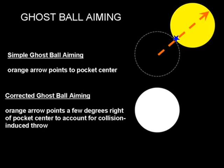So as a result, you do this whole process over again, but instead of pointing to the center of the pocket, you point a few degrees to the right of the pocket and get a ghost ball position. That's corrected ghost ball aiming. And when I talk about ghost ball aiming, that's what I'm talking about.